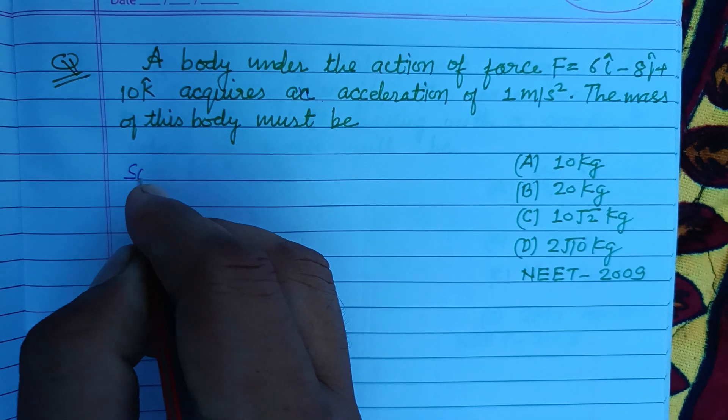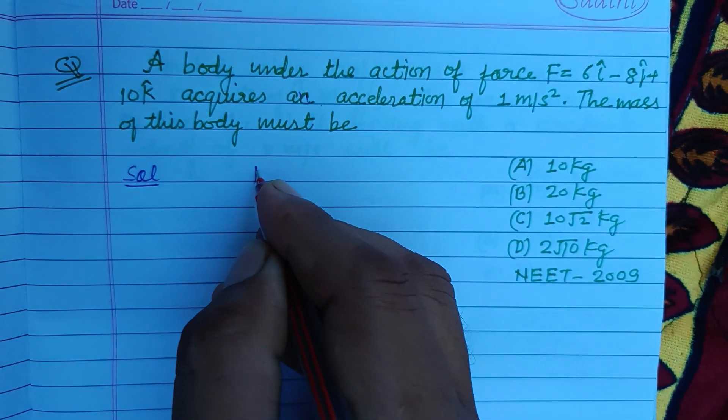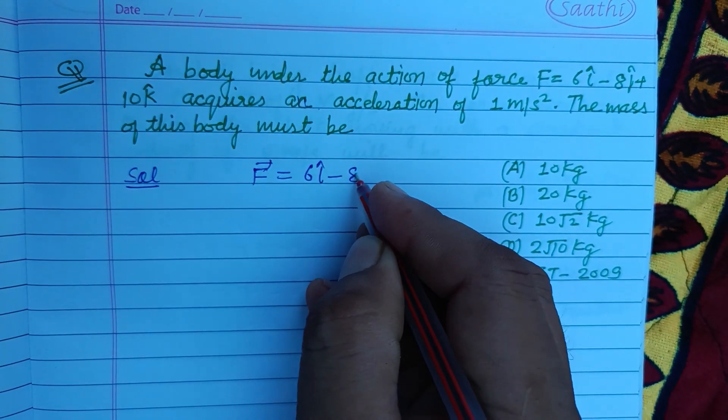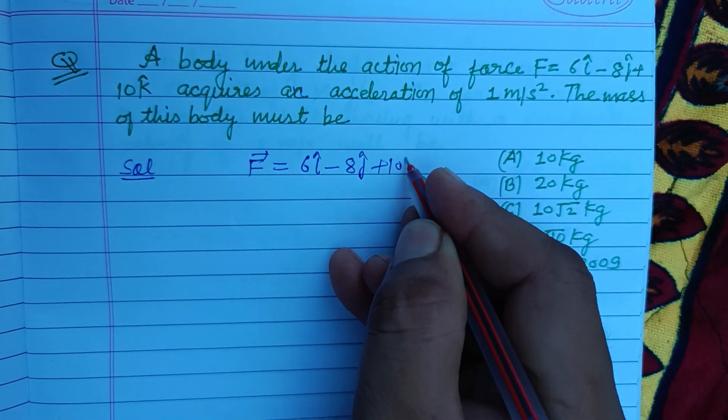So students, here force is given to us: F equal to 6i minus 8j plus 10k.